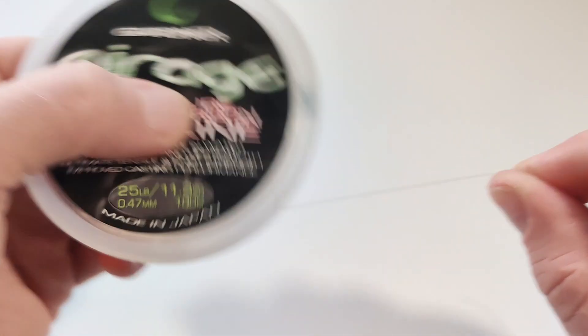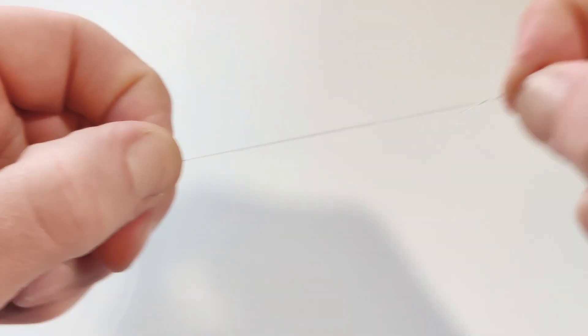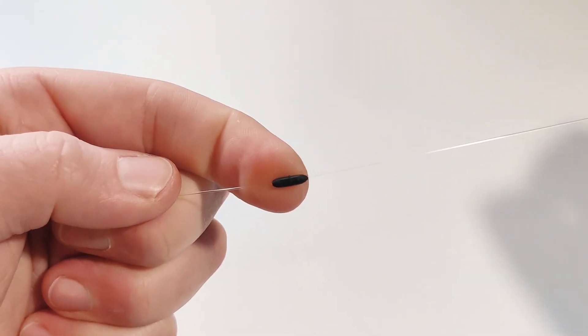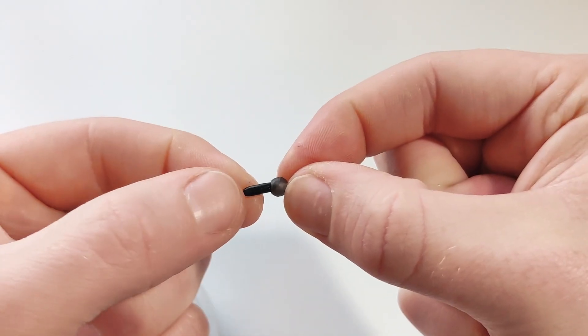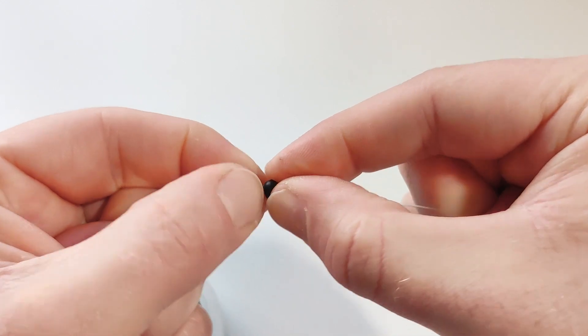Take your fluorocarbon and peel off the length whilst leaving it on the spool for now. Slide on a large tungsten sinker, followed by the 5mm rubber bead. Moisten your sinker and slide the rubber bead on top.